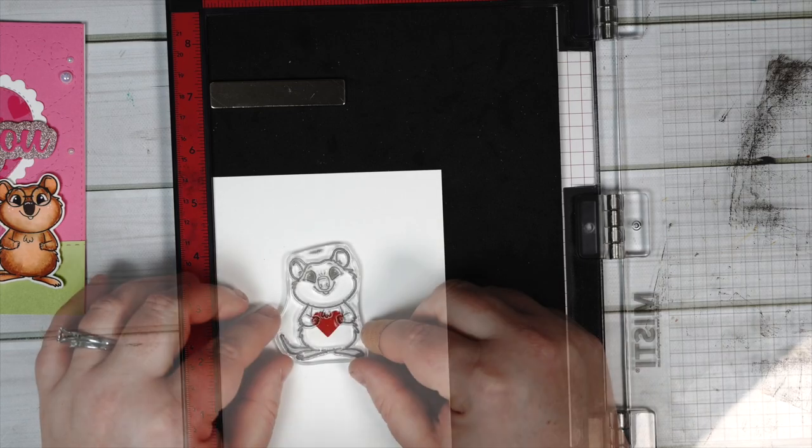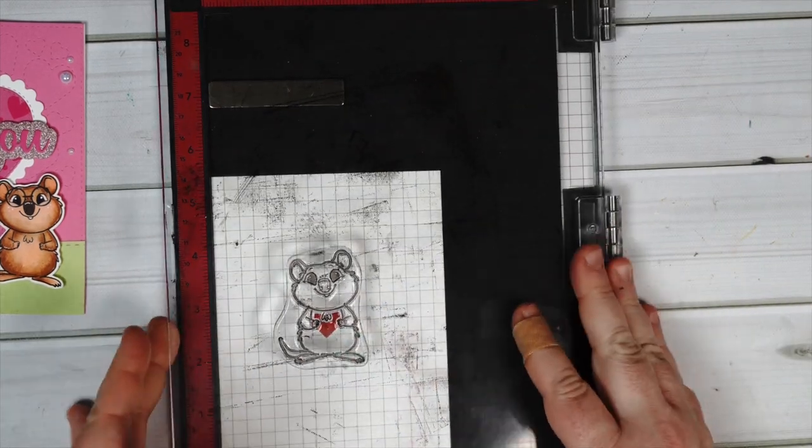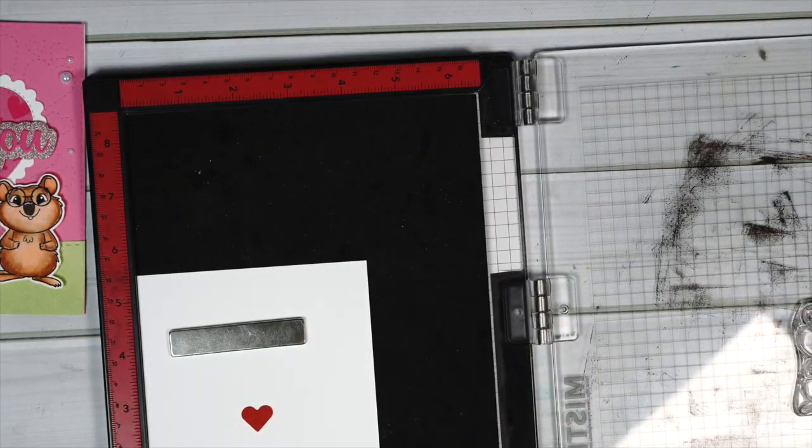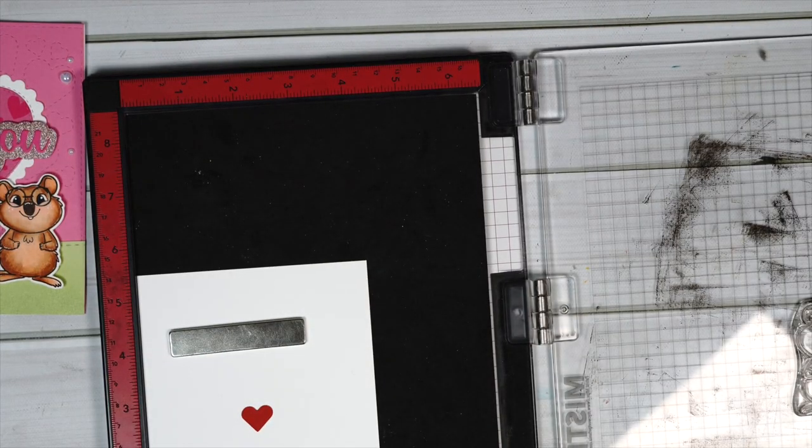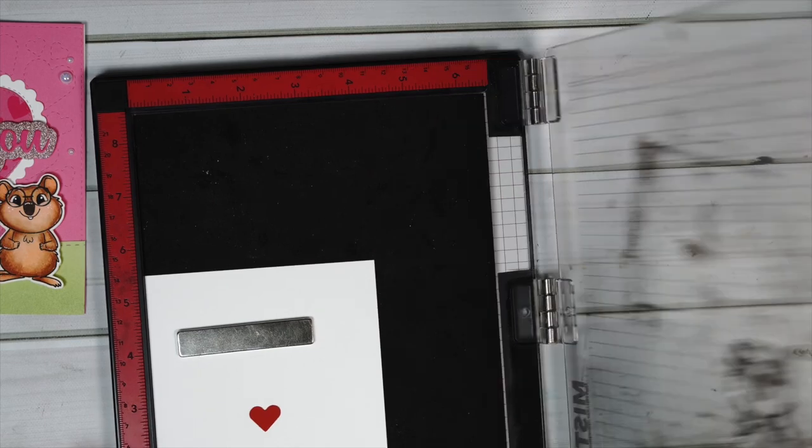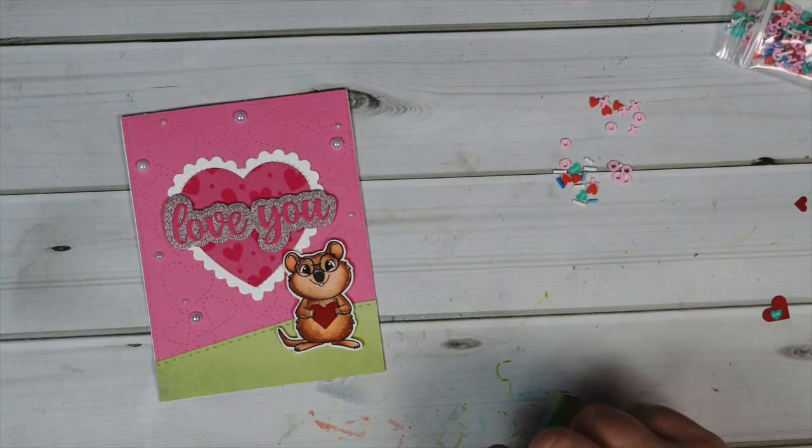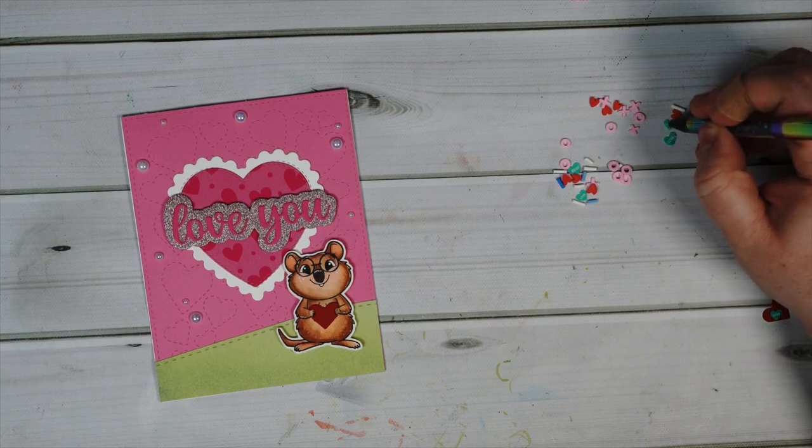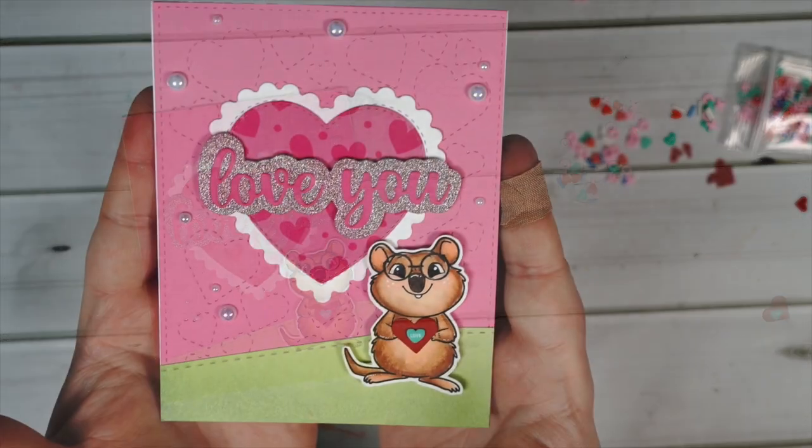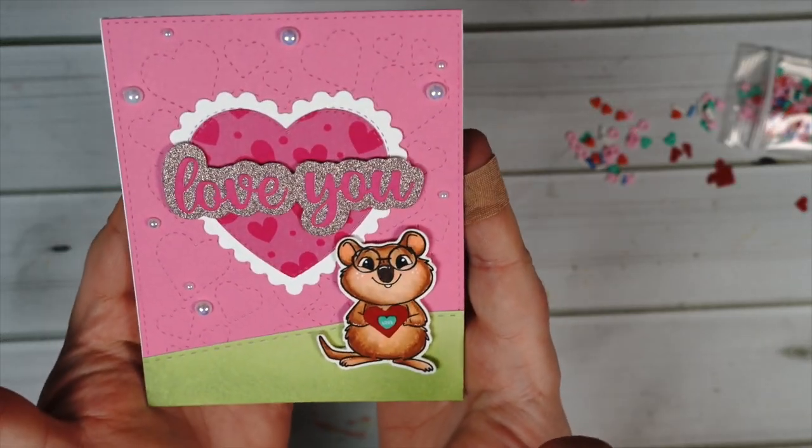I thought the quokka needed something so I used another die to just cut out some of the little hearts and then I went in with the quokka stamp and stamped it onto the heart so I could get the hands. I thought it would look great if I cut around the little hands or the little paws and put the heart down so it looks like he's holding the heart.